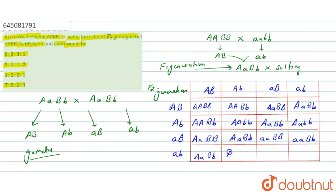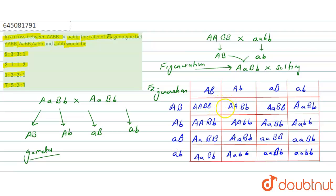So the F2 generation that is obtained after selfing of the F1 generation includes genotypes: AaBb, AaBb, aaBb, aaBb, aabb, aabb — and so on. This is the F2 generation obtained after the selfing of the F1 generation.